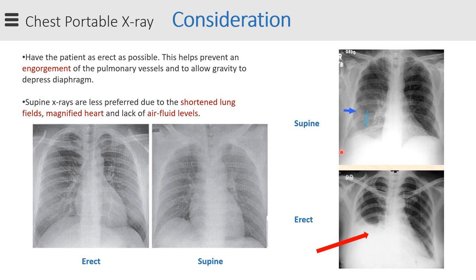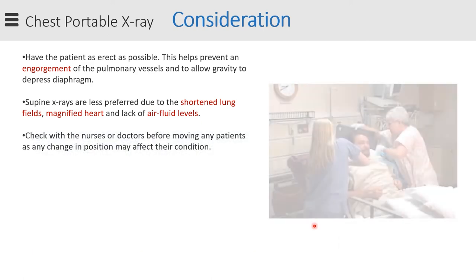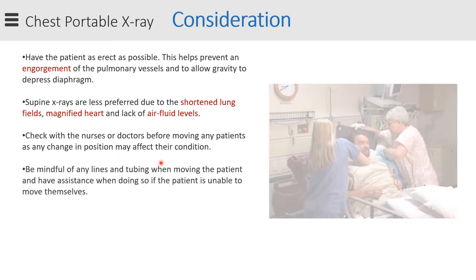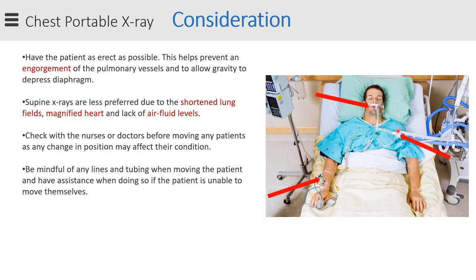In cases where bilateral pleural effusion is present, it's not easy to notice on supine. So especially when the physician wants to rule out fluid in the lungs, the erect x-ray is preferred. Always check with the staff nurse or physicians before moving any patient, as any changes in position may affect their condition, and be mindful of any lines, tubing, or medical devices connected to the patient.